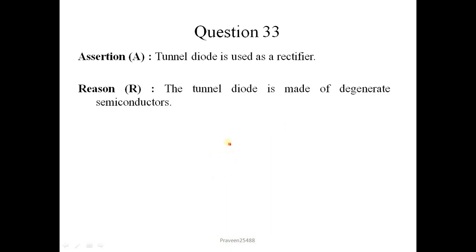Next is tunnel diode is used as a rectifier. This is incorrect. The tunnel diode is made of degenerate semiconductors. This is correct. So A is false but R is true. So correct option is fourth one.